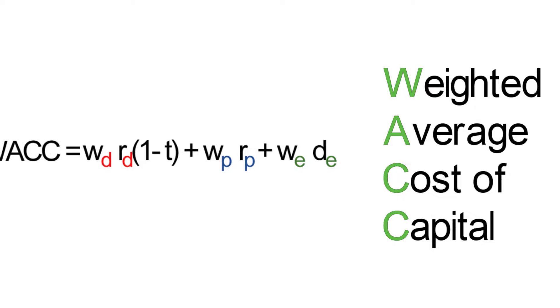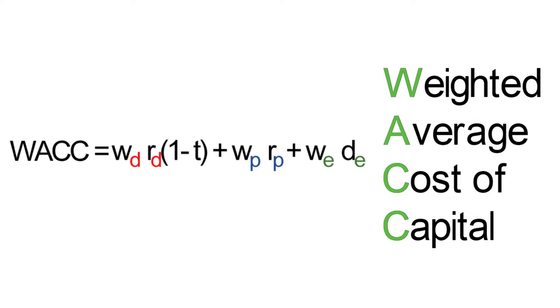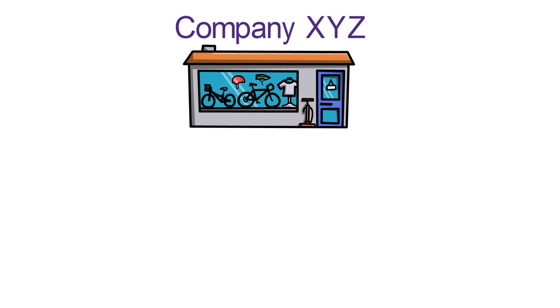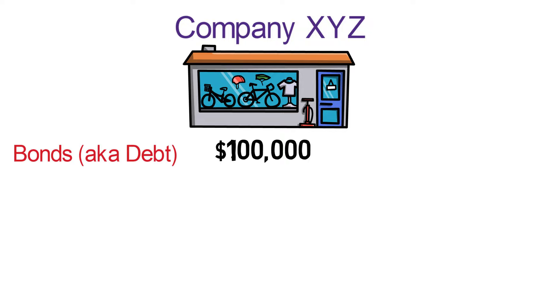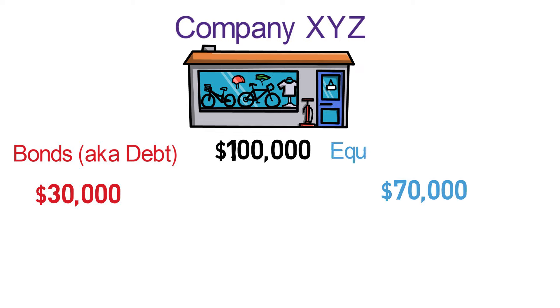The formula for calculating WACC looks like this. Although this formula may look a bit long at first, it's actually quite intuitive once you break it down. Before we even tackle the formula, let's walk through a quick example. Let's imagine that company XYZ decides to go out and raise $100,000 to grow their business. They have decided to issue bonds in the amount of $30,000 and then sell $70,000 worth of equity to get them to the $100,000 they're looking for.